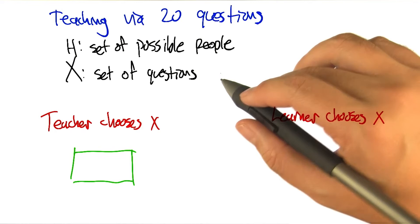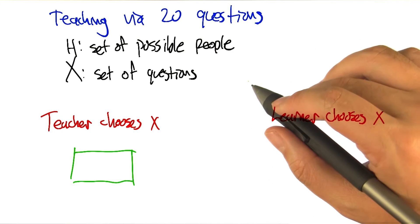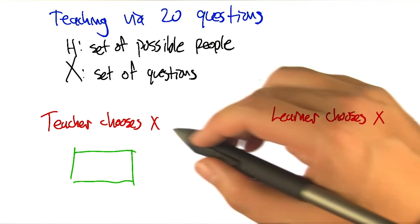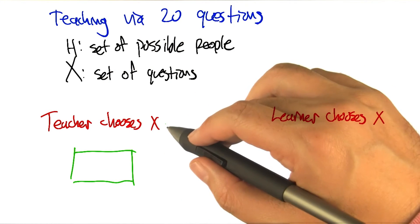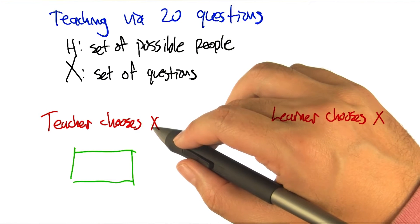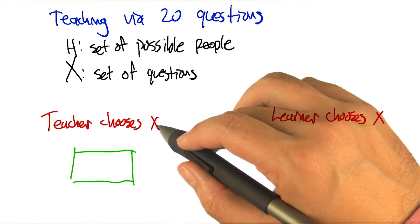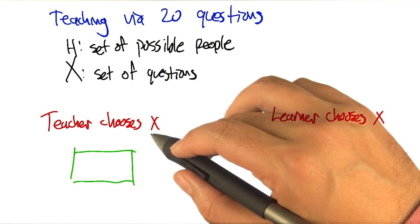Does that analogy make sense to you, Charles? It makes perfect sense to me. All right, good. So now let's think about two different cases. One where the teacher is going to try to select which questions to ask. So the teacher is going to say to the student, here's the question you should ask me next, to try to figure out which person it is as quickly as possible.